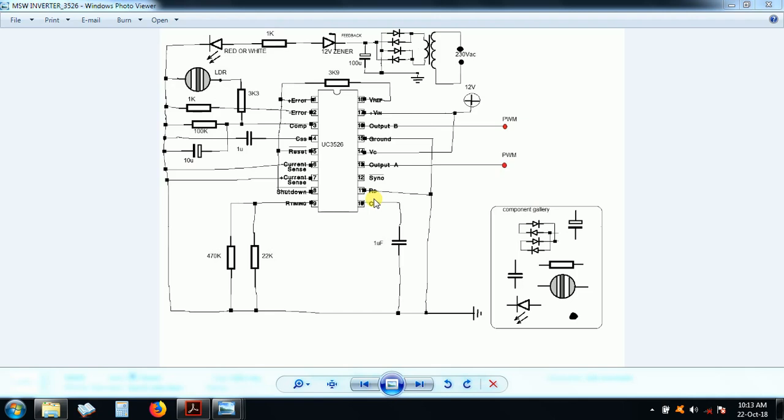This is the second method of making an inverter. This is what they call the Modified Square Wave Inverter, or some people would want to call it Modified Sine Wave Inverter. Well, it is not a sine wave, it is a square wave.